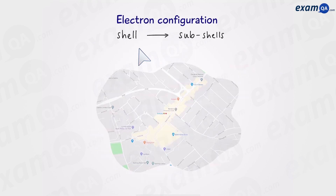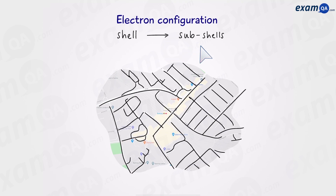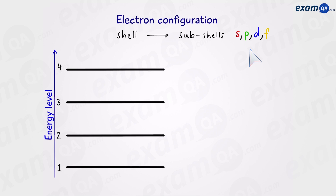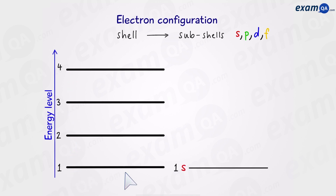A shell is broken down into subshells just like a town is comprised of many roads. We have four types of subshells: S, P, D and F. So we can think of our town as having four types of roads. In this diagram on the left we have the first four shells around the nucleus. As we can see, the higher we go the more energy a particular shell has. Starting with the first shell, it is quite small so it only has one subshell — the S subshell.